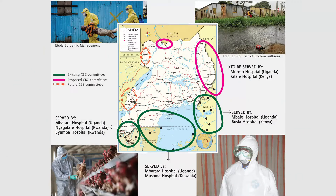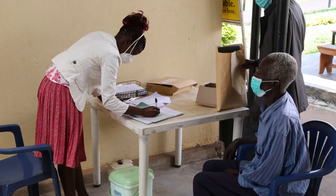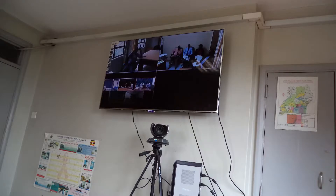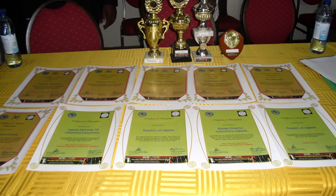We are also involved in cross-border surveillance with other East African countries. We have established cross-border surveillance committees, especially with Kenya, Tanzania, and Rwanda. We also intend to develop surveillance committees with Sudan and the Democratic Republic of Congo. We have achieved a lot under this project and look forward to achieving even more in infrastructure and human resources over the remaining three years.